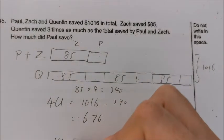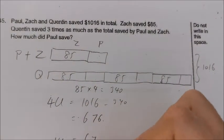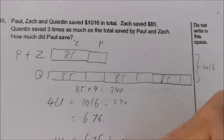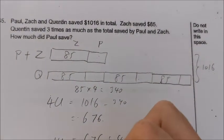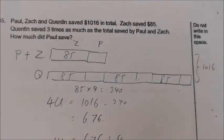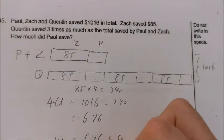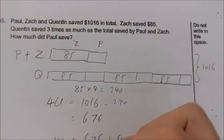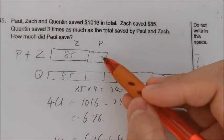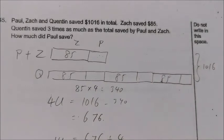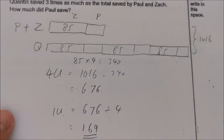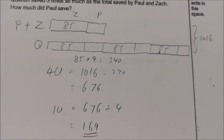So one unit will be just 676 divided by 4. We have 169. So this is one unit, and it's exactly what we are asked to find.